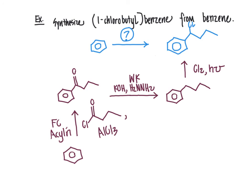So our three-step reaction series to go from benzene to our targeted chlorine-substituted product is: Friedel-Crafts acylation, then Wolff-Kishner reduction, then benzylic free radical halogenation. This is certainly not the only route, but it's one relatively short three-step path, and it highlights the value of benzylic free radical halogenation for attaching a halogen at the benzylic position.